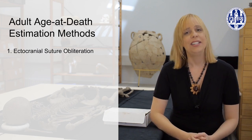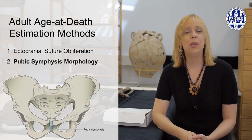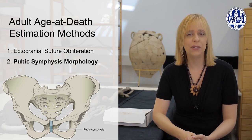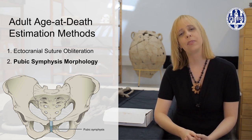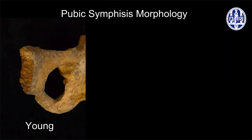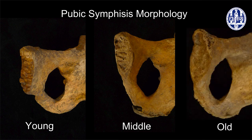The next adult age estimation technique uses the shape or morphology of the pubic symphysis — where the two pubic bones meet at the front of the body, joined through cartilage — and they undergo relatively regular changes in morphology from adolescence onwards. In adolescence and early young adulthood, the surface is undulated and rugged, showing ridges and grooves with no rim around the outside. With increasing age, the surface becomes flatter and develops a rim. By old adulthood, the pubic symphysis is completely flat, even slightly indented, often with a porous or pitted appearance and spicules of bone along the margins.